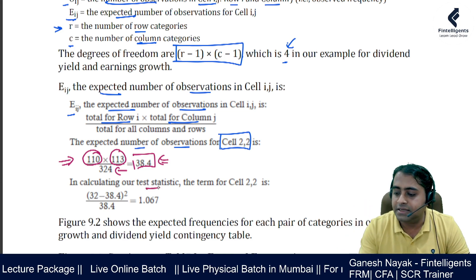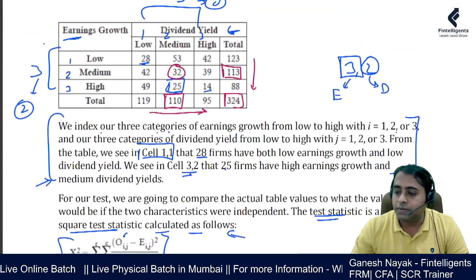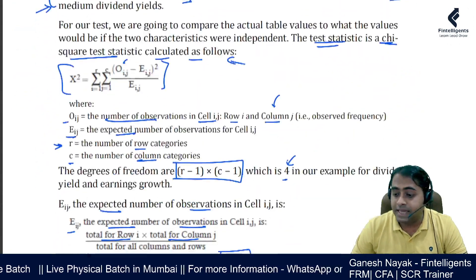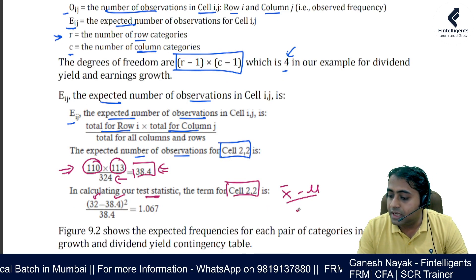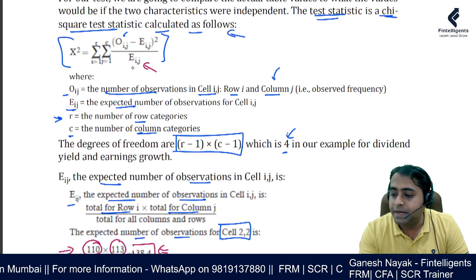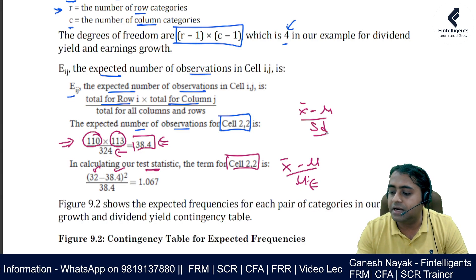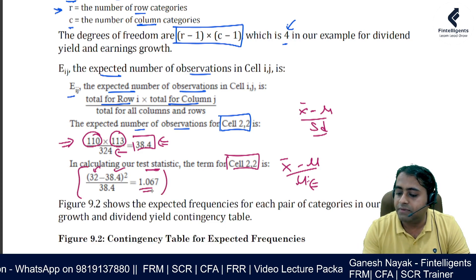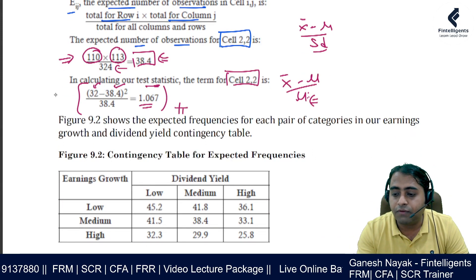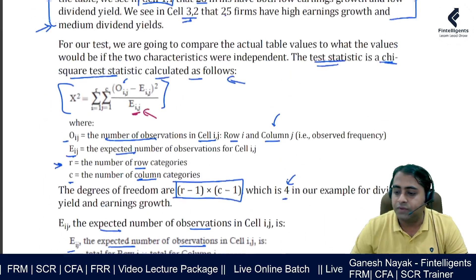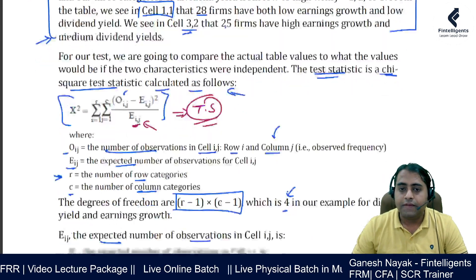To calculate the chi-square test statistic, for each cell compute: (observed minus expected) squared divided by expected. For cell (2,2), that is (32 minus 38.4) squared divided by 38.4, giving 1.067. This is analogous to the standard (X-bar minus mu) divided by standard deviation logic, except here the expected value serves as the denominator. We run this calculation for all nine cells in the 3-by-3 table.